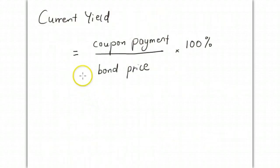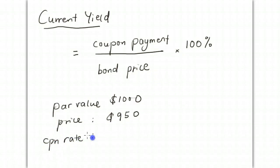How do we calculate yield? One way is to calculate the current yield. The formula is: current yield = (coupon payment / bond price) × 100%. For example, if a bond has a par value of $1,000, a current price of $950, and a coupon rate of 7%, what's the current yield?